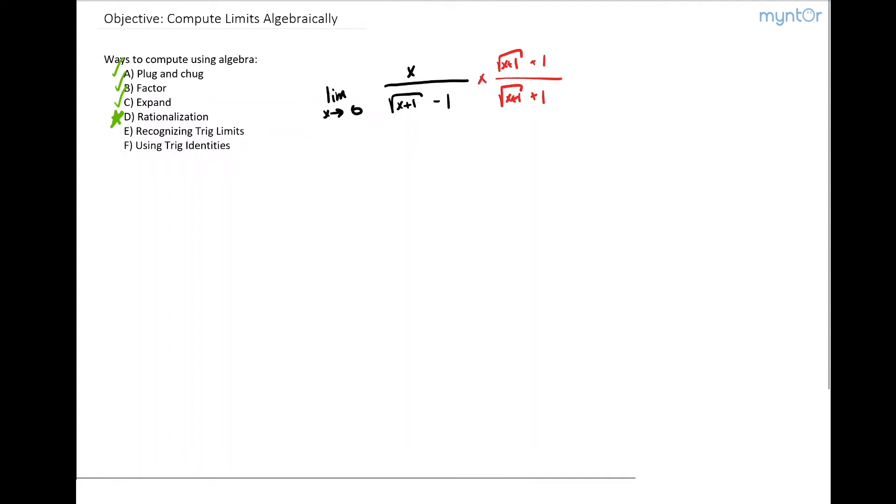If I multiply these together, this equals the limit as x approaches zero of x times the square root of x plus one plus one in parentheses, divided by